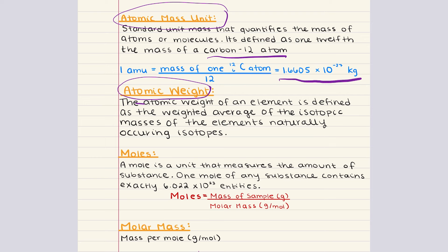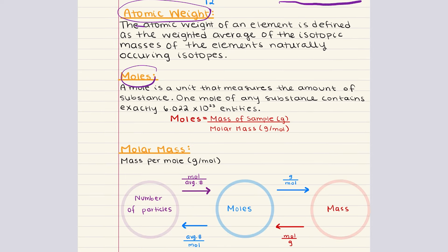Next up is moles. A mole is a unit that measures the amount of a substance — just like one dozen signals 12 of some object, one mole of a substance signals a measure of the amount of a substance. Specifically, one mole contains exactly 6.022 times 10 to the 23 entities — atoms, molecules, ions, etc. This number is known as Avogadro's number, and the mole allows chemists to count particles by weighing them.